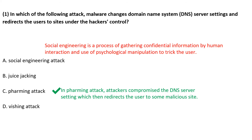Social engineering is a process of gathering confidential information through human interaction and the use of psychological manipulation to trick the user.